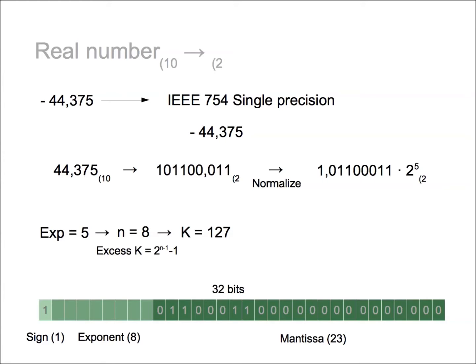So the 5 positive number will be 127 plus 5. That is 132. Finally, we encode 132 in binary and fill the exponent block with this number.